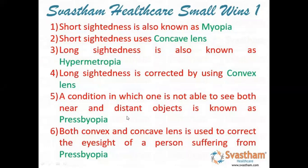A condition in which one is not able to see both near and distant objects is called presbyopia. In order to correct that, we require a biconcave lens. Thank you so much.